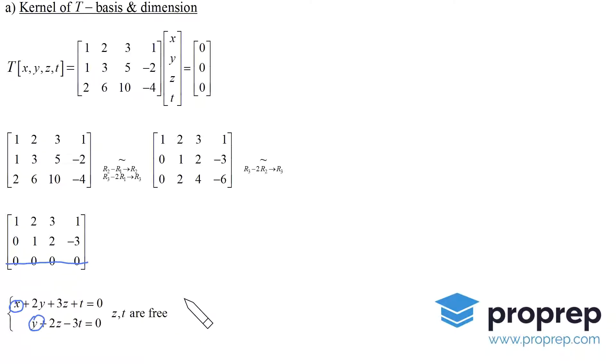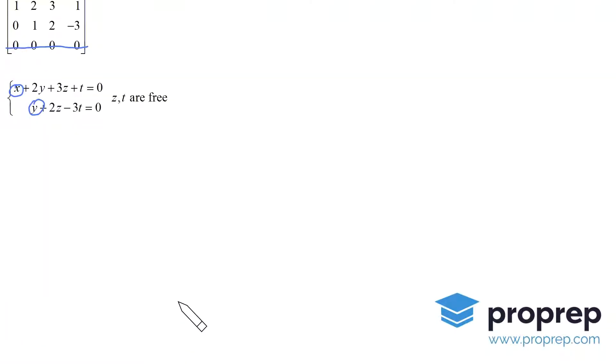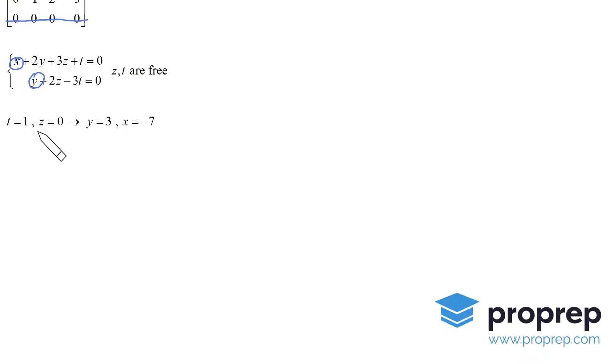Remember we had this technique called the wandering ones, where each time we let one of the free variables be one and the remaining zero. So first, let's take t = 1 and z = 0, and then we'll do the other way around.